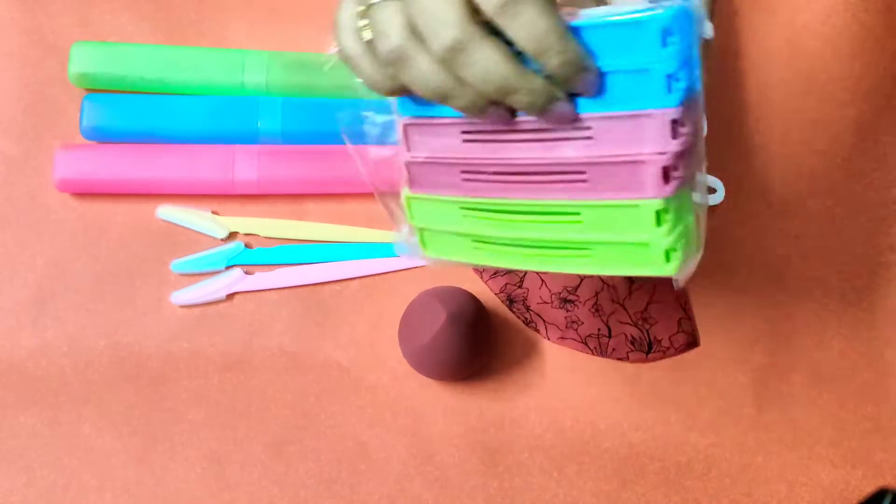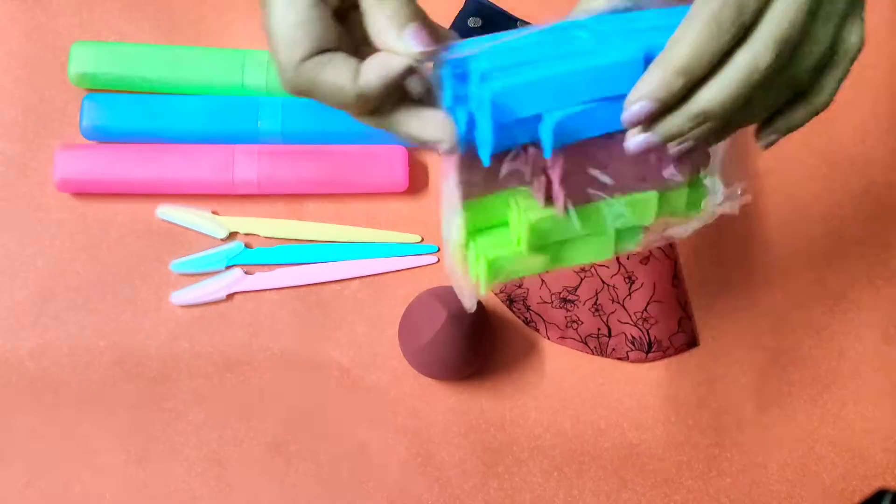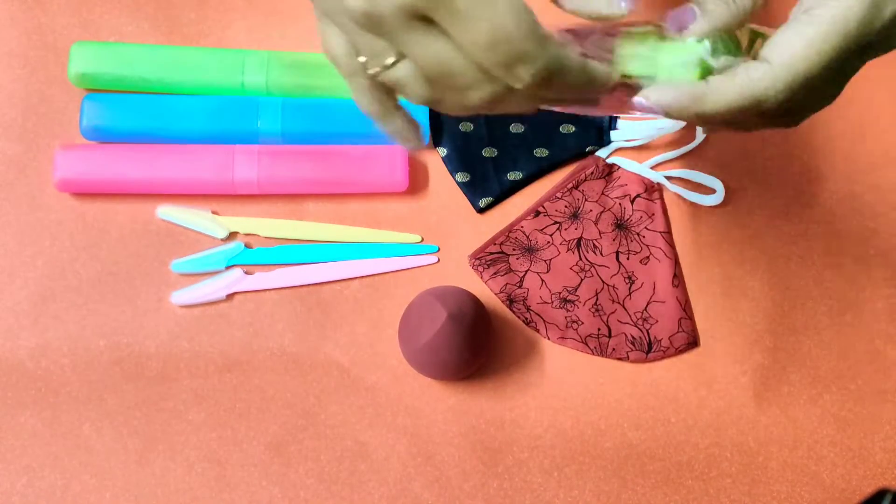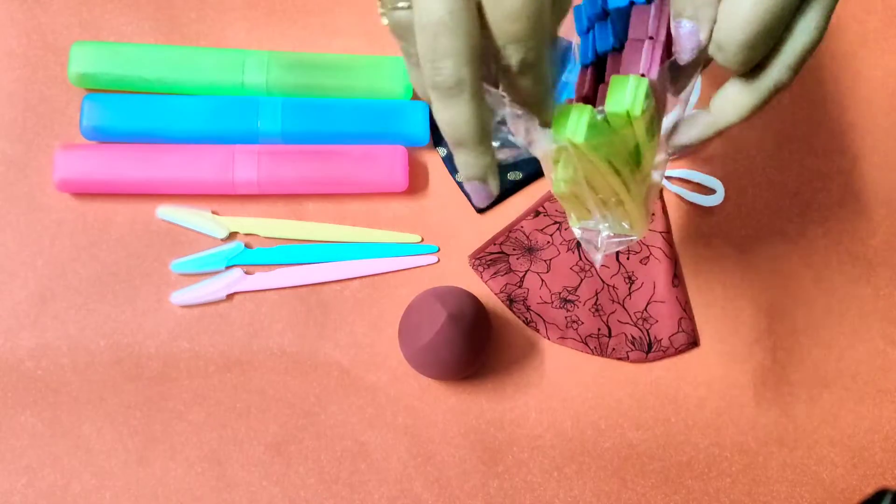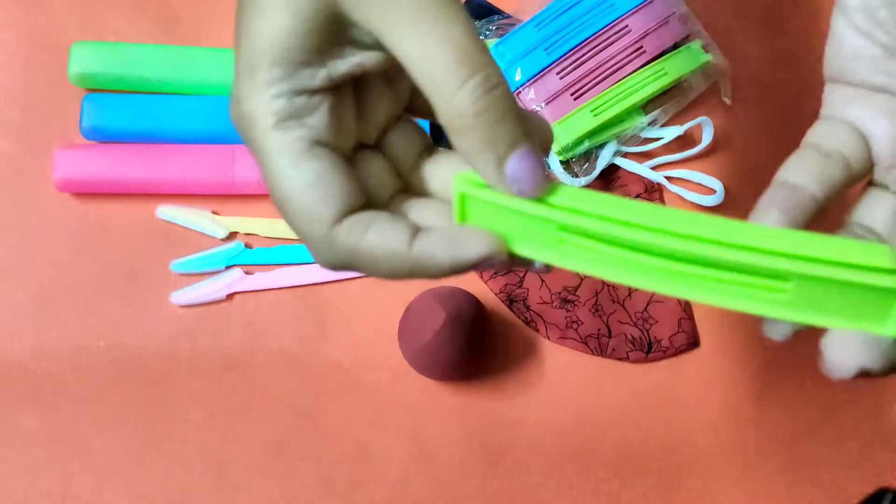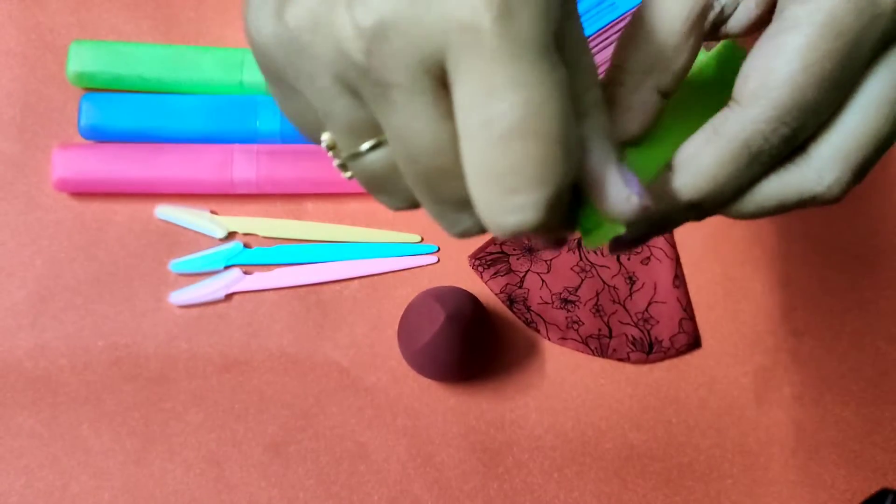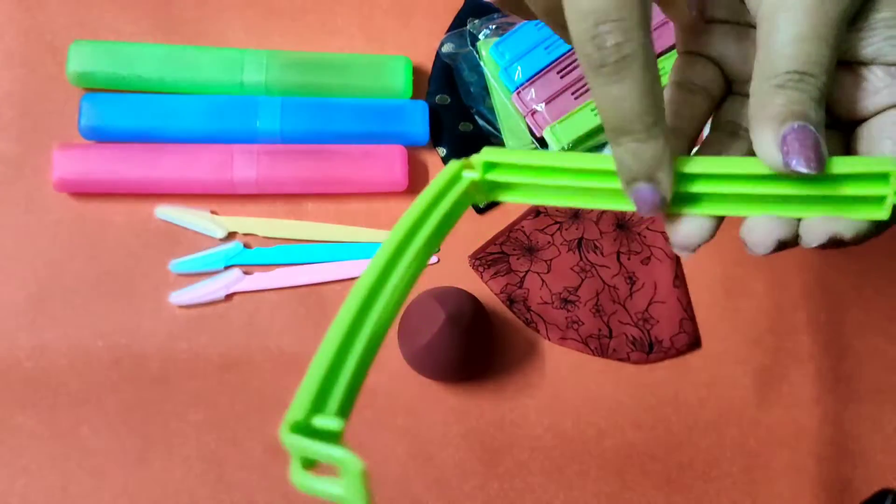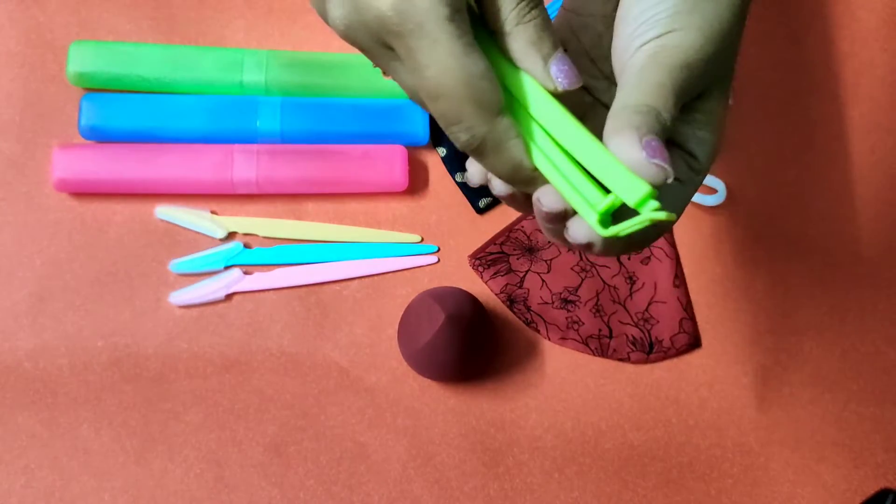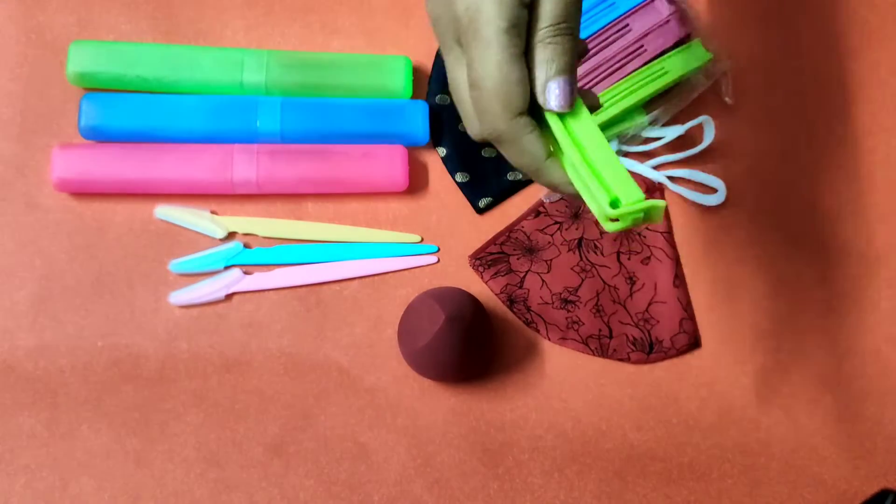And lastly I have these food clips, like clips for your food packets to close them. This is a pack of 18. You also get pack of 36 or pack of 6. You can get one size only. In this there are three sizes: small, medium, and large.